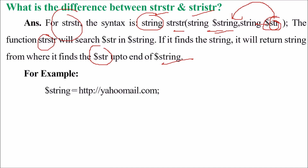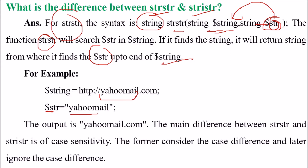For example, this is a string: http colon forward slash mail dot com. Now this is the string str — you need to find out Yahoo mail. It actually exists in this string. So the output would be from where it matches till the end. The output will be allmail.com.